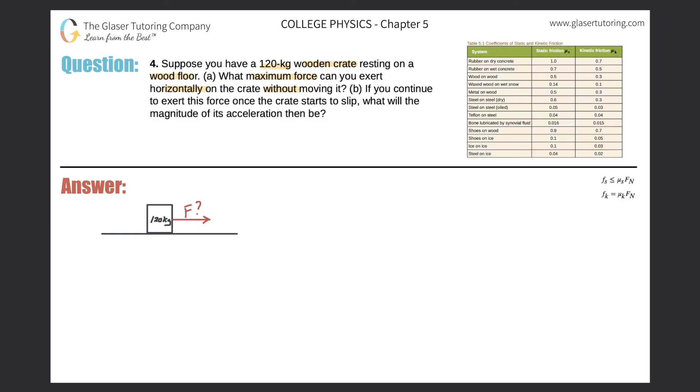So let's go to the table and let's see if we can find wood on wood. And it looks like right here, and the coefficient would be 0.5. All right, so that's great. Let's just write that down. So we got the coefficient of static friction is equal to 0.5.